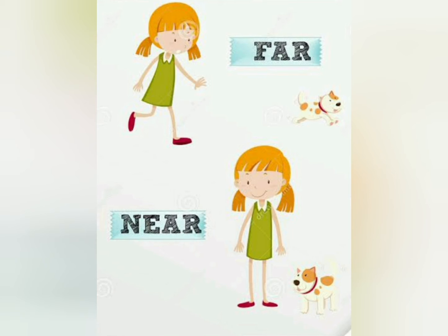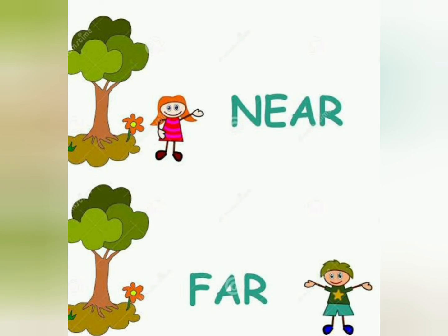Now see in this picture, the dog is near to the girl. And in the other picture, the dog is far from the girl.